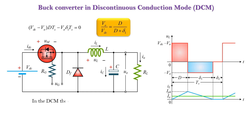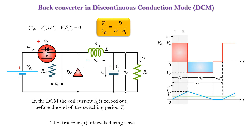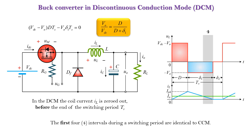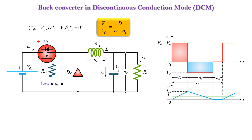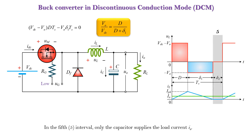In the discontinuous conduction mode, the coil current IL is zeroed out before the end of the switching period TS. The first four intervals during a switching period are identical to continuous conduction mode. In the fifth interval, only the capacitor supplies the load current IO.